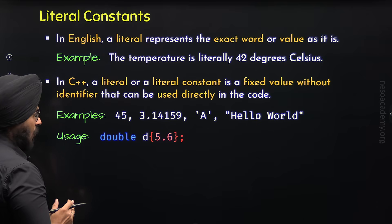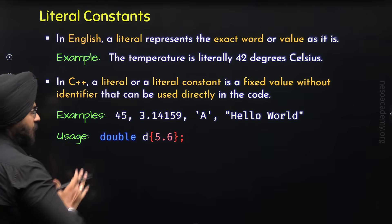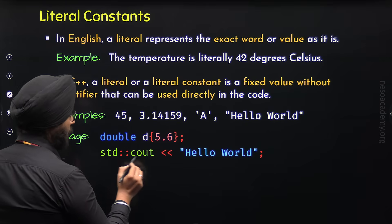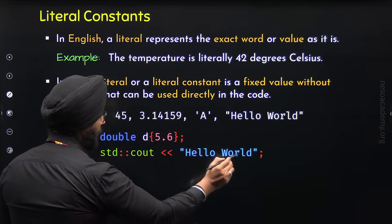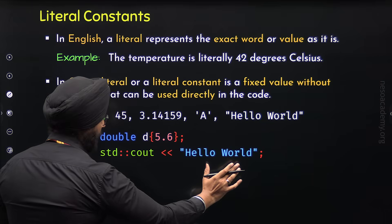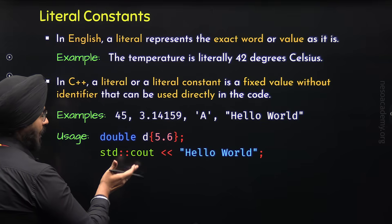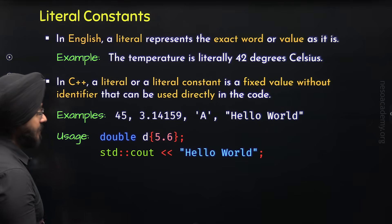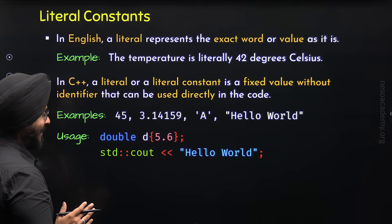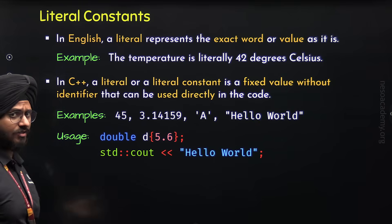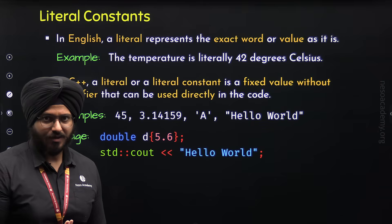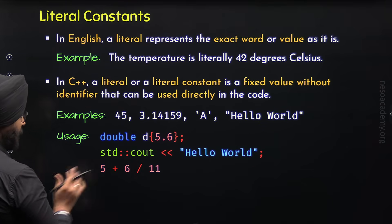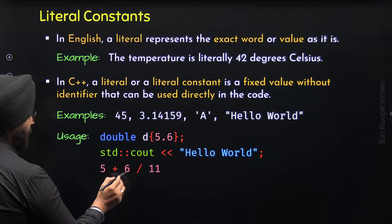The second use case is we can print a literal directly on the screen with the help of the cout object. Here I have used the cout object to print the string 'hello world' on the screen — this is the string literal which I am directly providing, and it will be displayed on the screen. The third use case is that we can use a literal in an expression. For example, here I have 5 plus 6 divided by 11, where 5, 6, and 11 are literals.